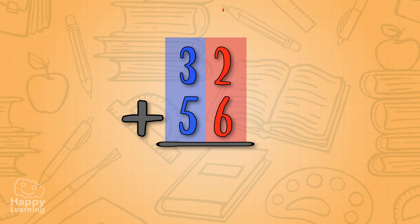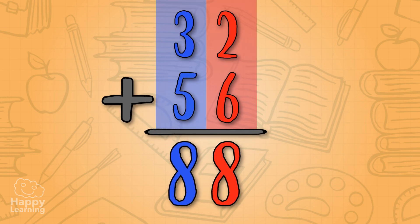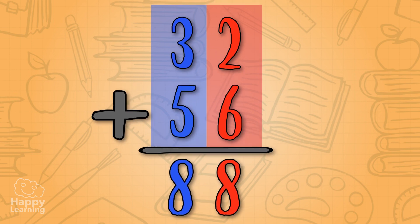Now, we need to add the ones from both summands! Two plus six equals eight! And now, let's add the tens! Three plus five equals eight! So the final result is... Eighty-eight! That rhymes with cake!